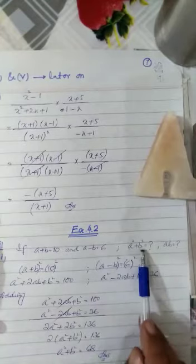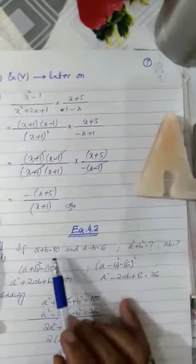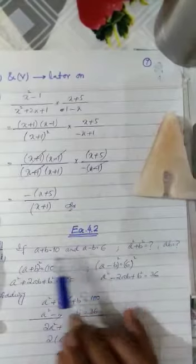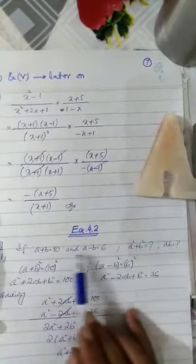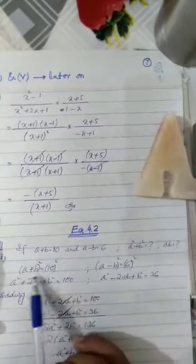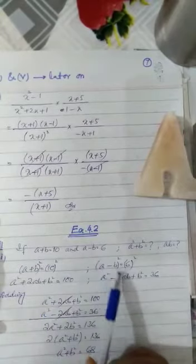This is given in your book, question number 1 part 1. Now girls, after taking these two values, because these two values were given, 'if' means given, so we have written here: a + b = 10 and a - b = 6.